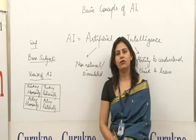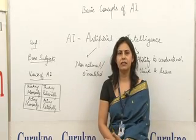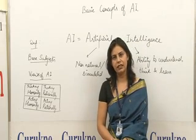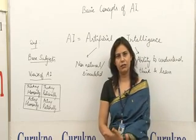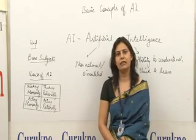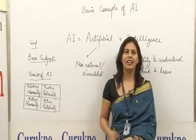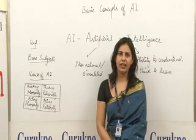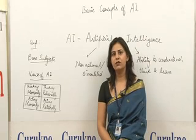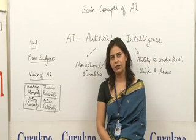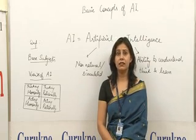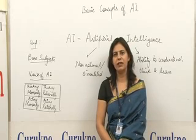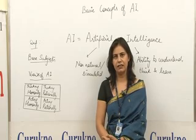For acting humanly, we want to develop a system which can act on the basis of information processing — which can act like a human being on the availability of processed information. In the 1950s, Alan Turing conducted a test called the Turing Test, meant to prove that a machine can act humanly, with almost a 30% chance of fooling a person for up to five minutes.